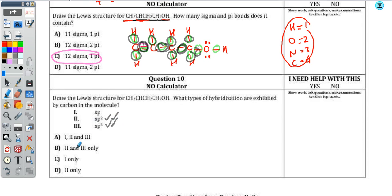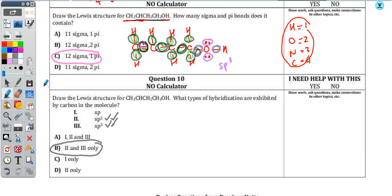Not part of this question, but if I wanted the hybridization of the oxygen — it has four regions including lone pairs, which count as a region — so the oxygen would also be sp3 hybridized. Hope that helps. Have a great day.